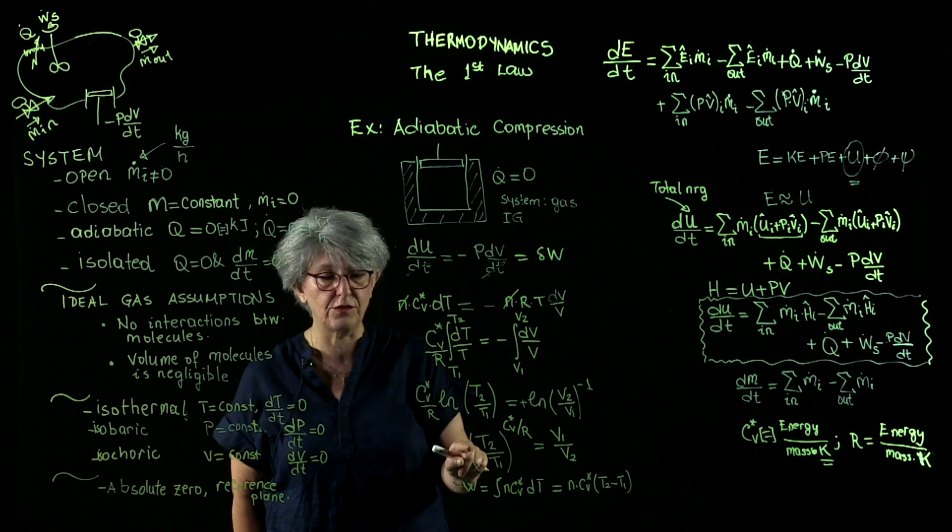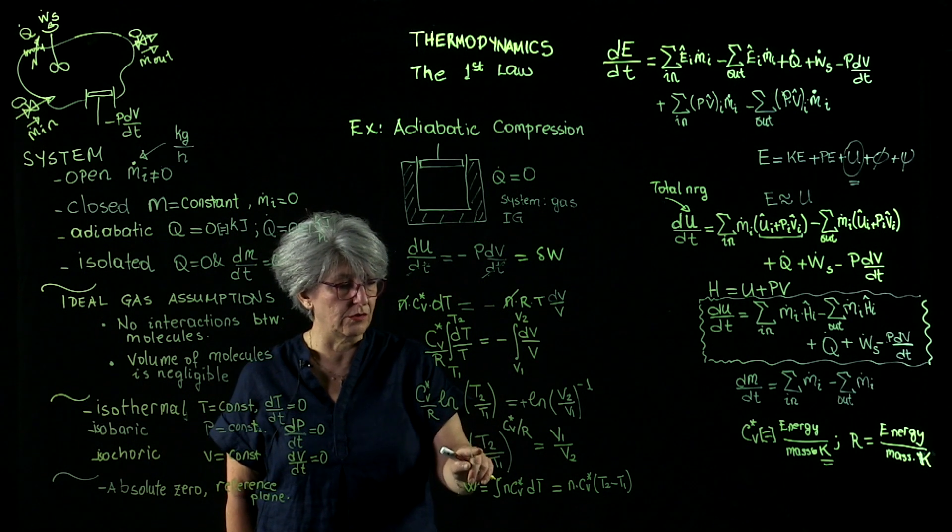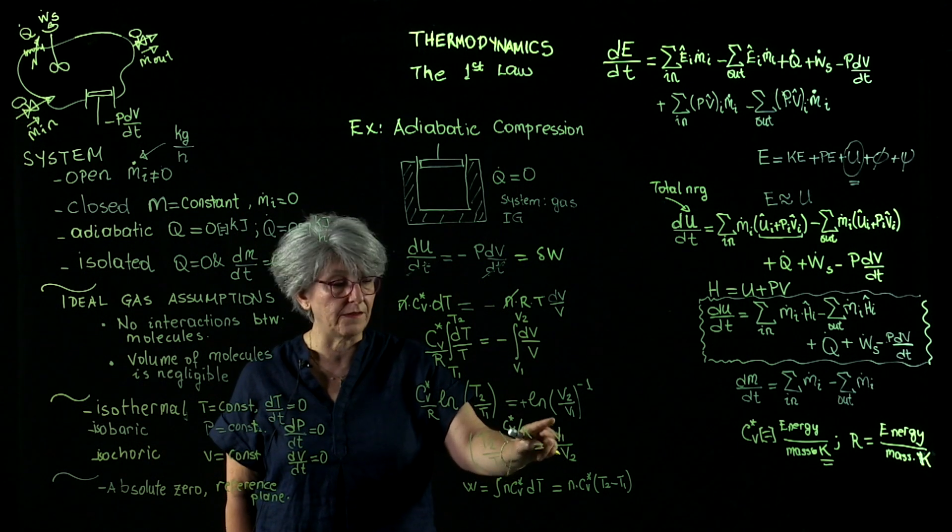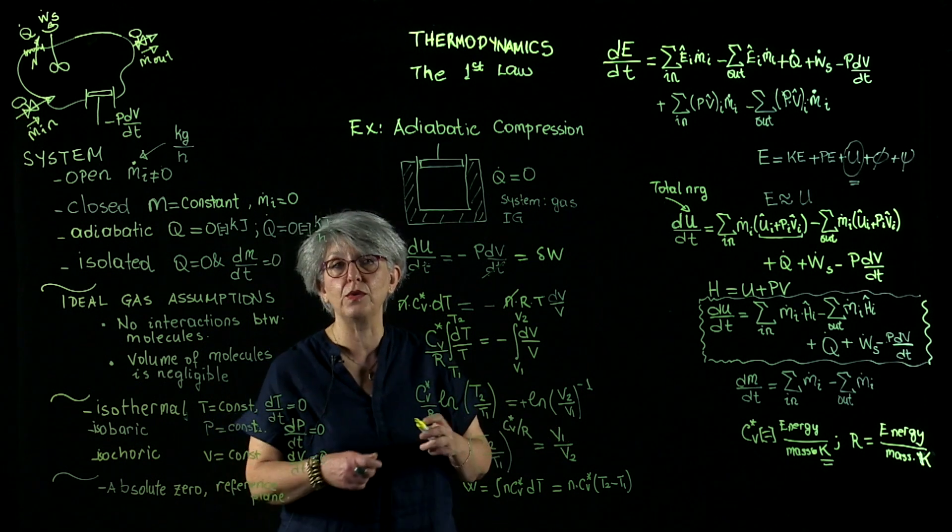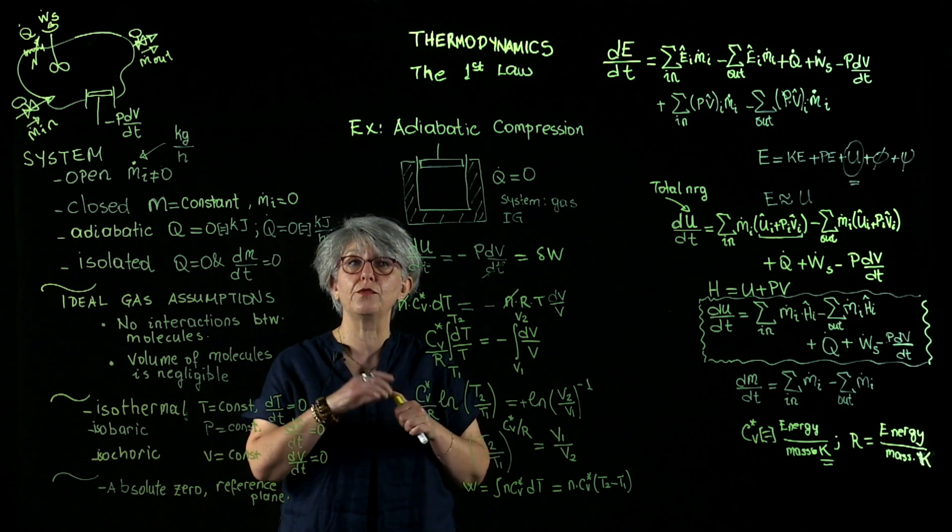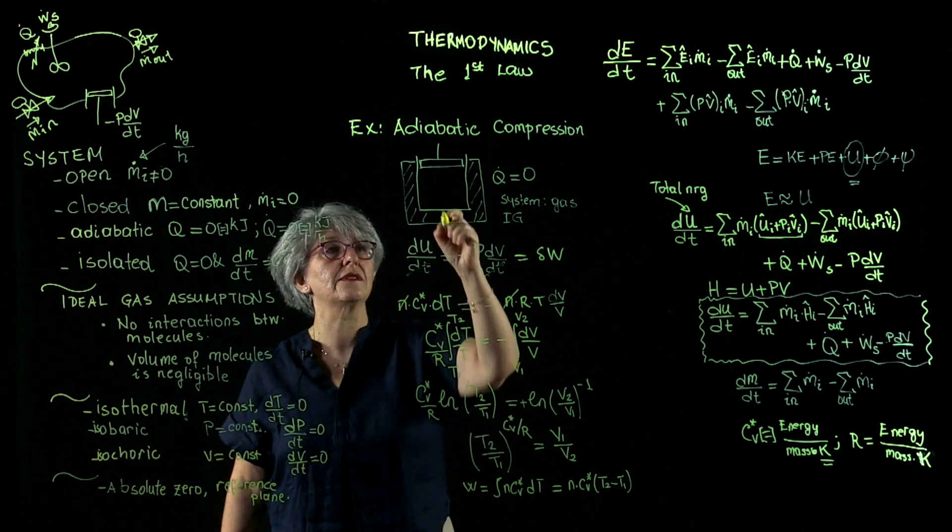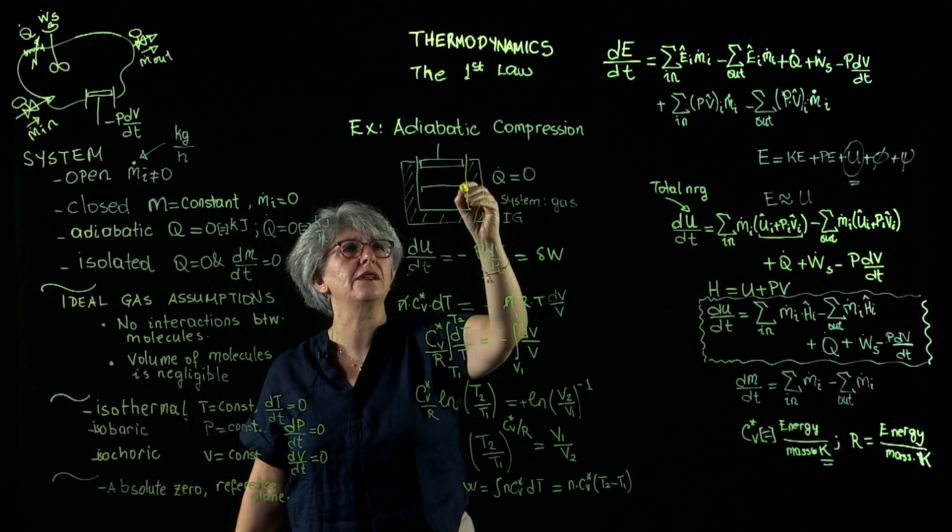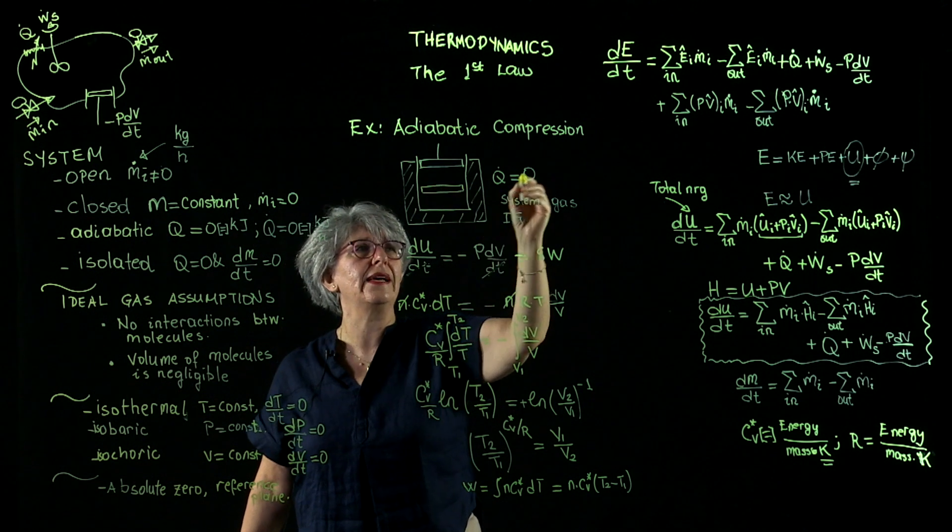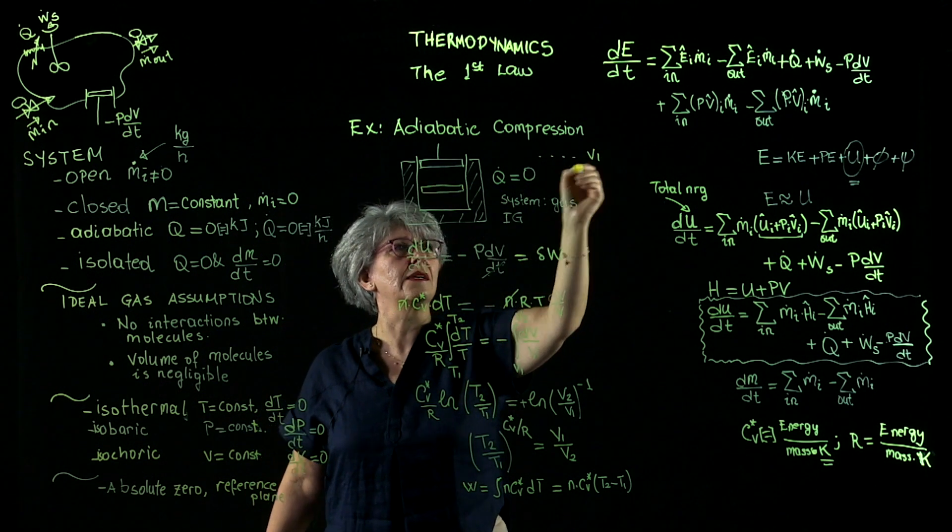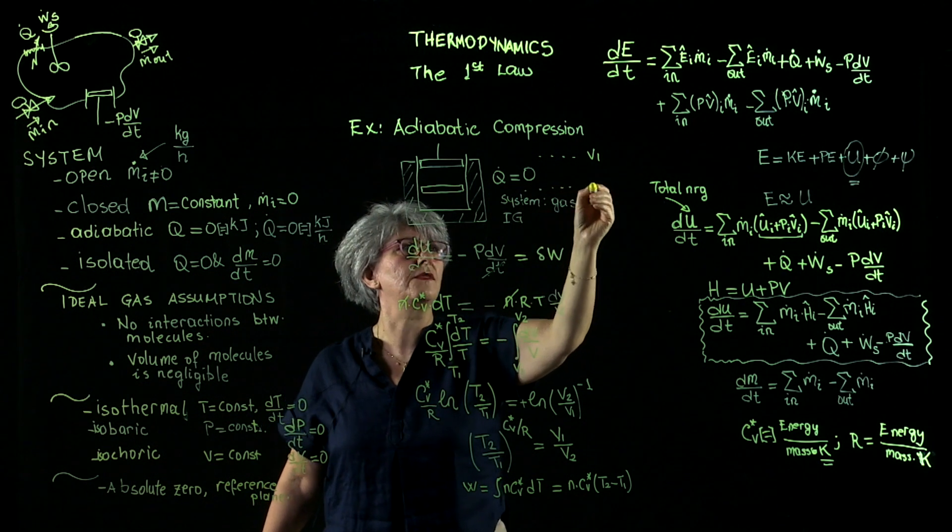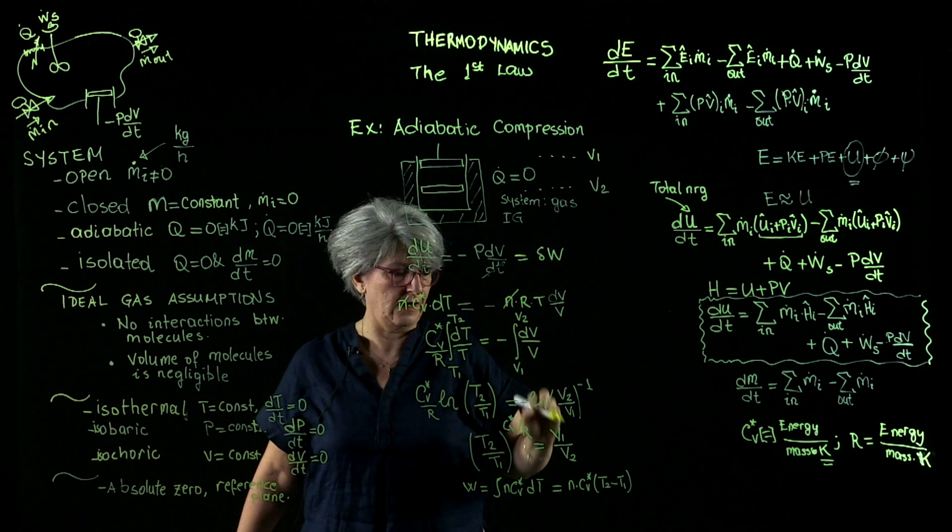Where did I get t2? I got t2 from a knowledge of v2. I knew what the final volume would be. That was my problem. Although that wasn't very clearly stated in the beginning of the problem. I had a gas at v1, I was compressing this gas to v2.